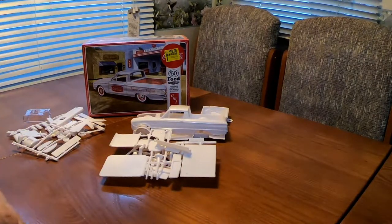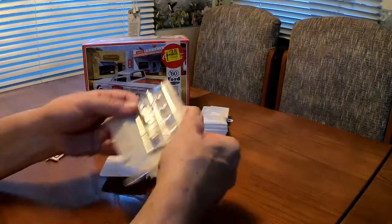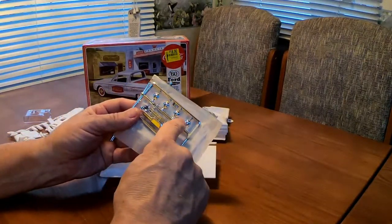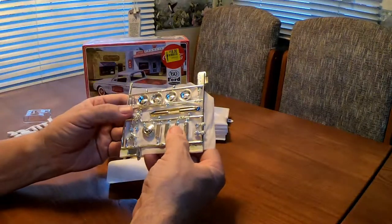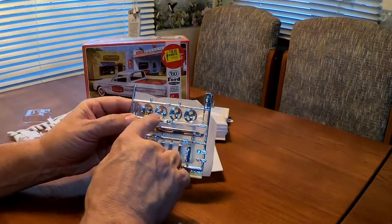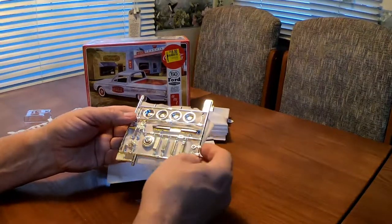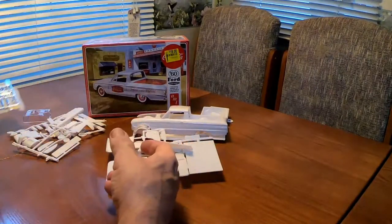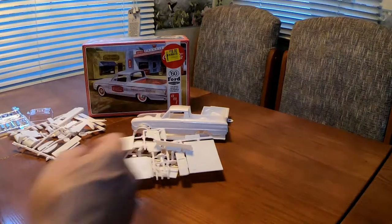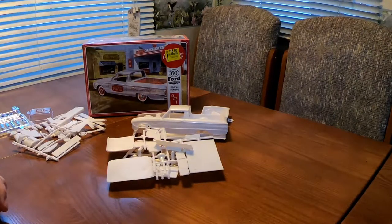You get two different chrome trees here. One with your grill and stock hubcaps. And if you roll it over you get your rear bumper and three spoke mag wheels and a chrome air cleaner. That'll look pretty nice on there. I might go with that instead of the stock wheels. I don't know. Have to wait and see.